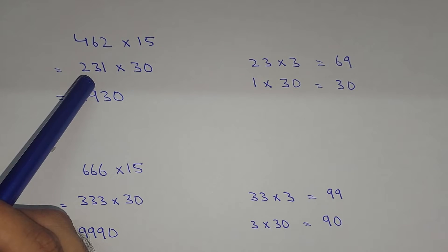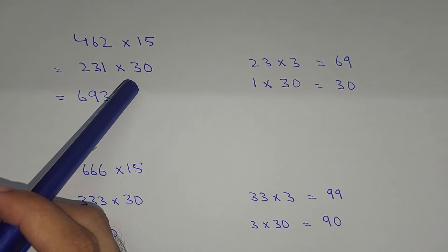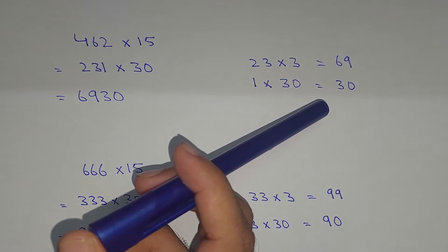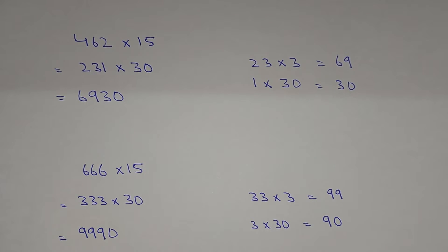So 23 multiplied by 3 equals 69, and 1 multiplied by 30 equals 30. Therefore, 6930 is the answer. Here we have 666 multiplied by 15. So 666 divided by 2 equals 333, multiplied by 30.